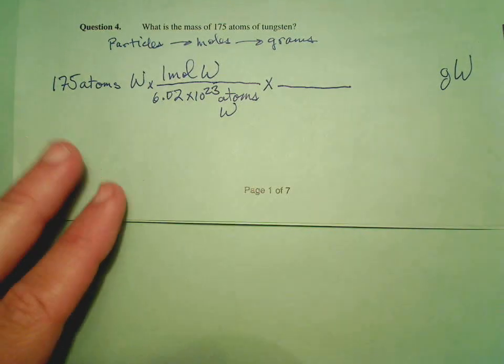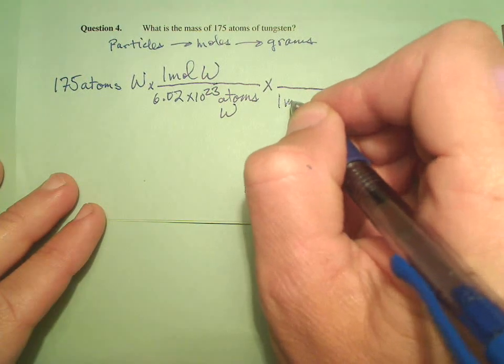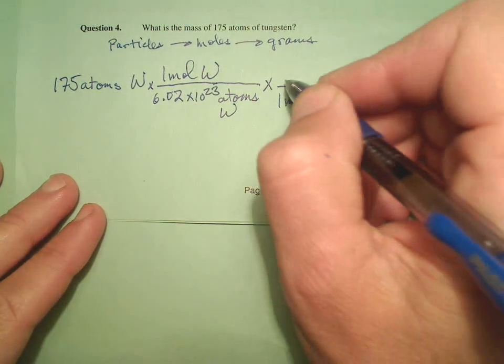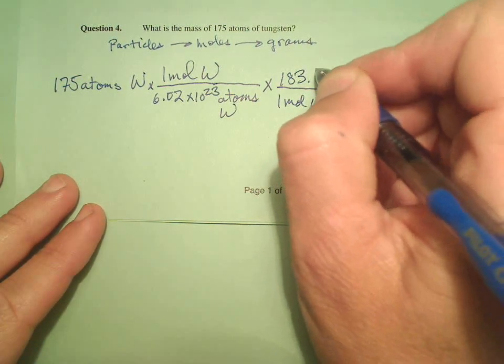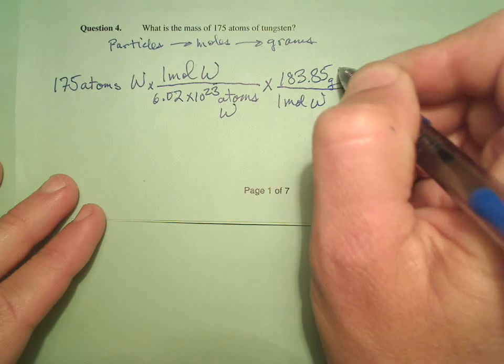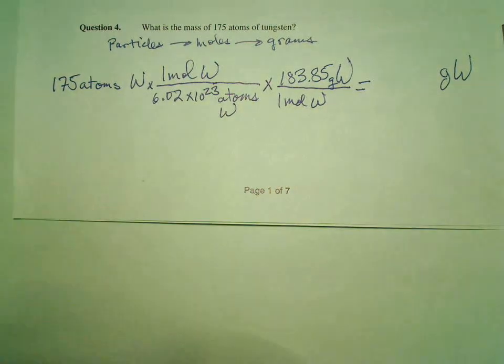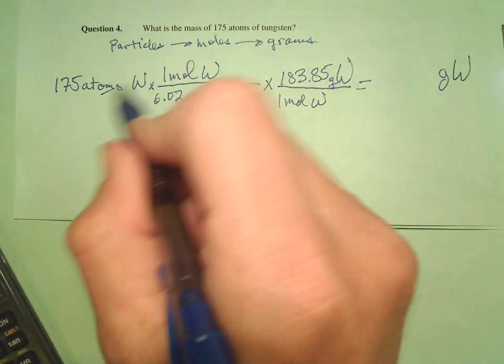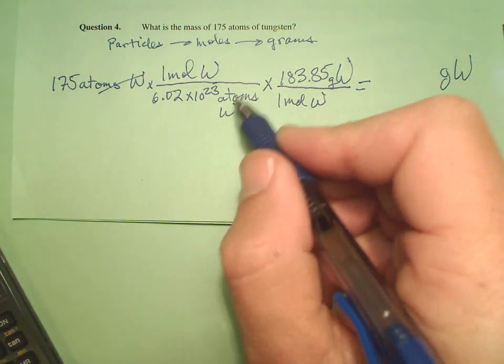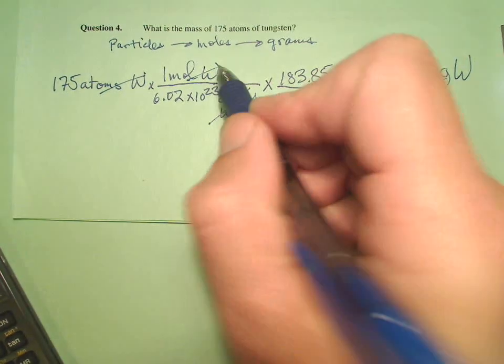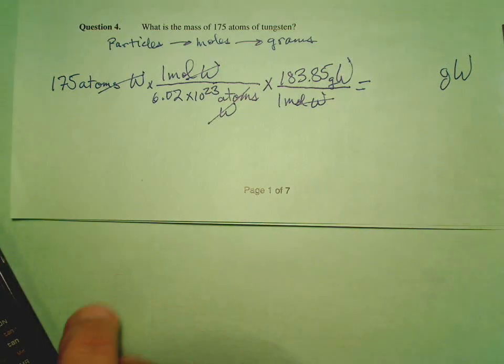So tungsten, 183.85 grams per mole. So I know that one mole of tungsten is 183.85, I hope that's what it said, grams of tungsten. Let's check our units. Atoms of tungsten, atoms of tungsten, moles of tungsten, moles of tungsten, grams of tungsten. Good.